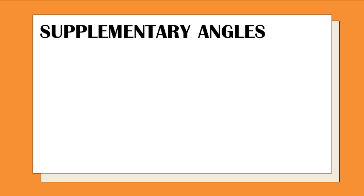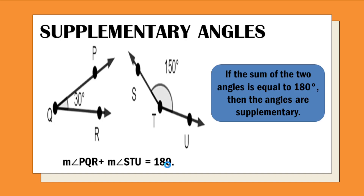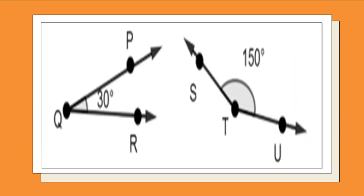Next, a pair of angles is supplementary angles. Measure of angle PQR, which is 30, plus measure of angle STU, which is 150, is equal to 180. So, if the sum of the two angles is equal to 180 degrees, then the angles are supplementary. If complementary angles have a sum of 90 degrees, supplementary angles have a sum of 180 degrees. So, 30 plus 150 is 180.